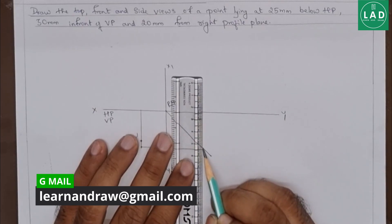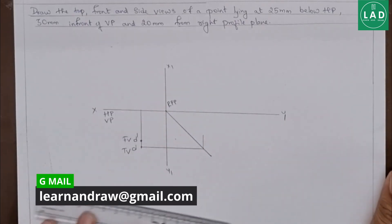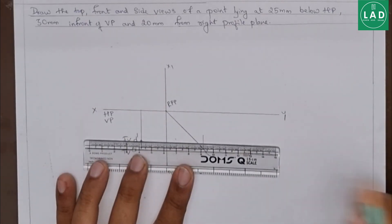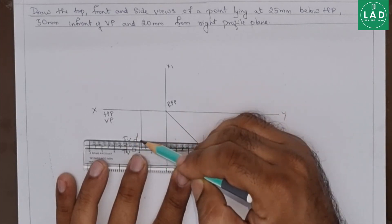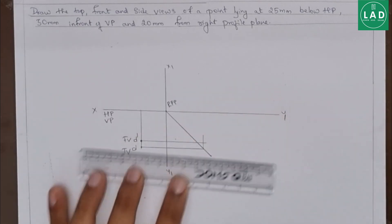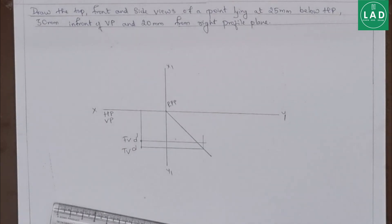Then project it upwards. Next step is, let's draw a projection line from the front view which will intersect with the projection line of our top view.